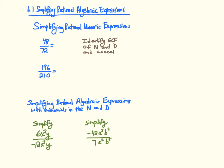The first lesson in the new unit on simplifying rational algebraic expressions. We're going to ultimately get to solving rational algebraic equations, but we first have to deal with simplifying algebraic expressions. Rational is going to be synonymous with fractions, so we're dealing with fractions here. Let's first remind ourselves what we do to simplify rational numeric expressions — in other words, simplifying fractions.